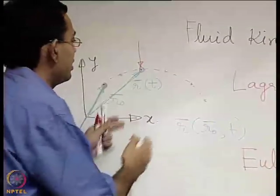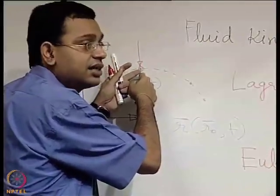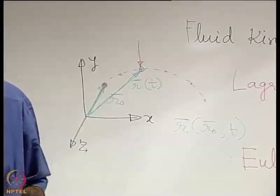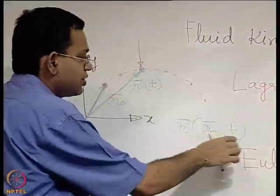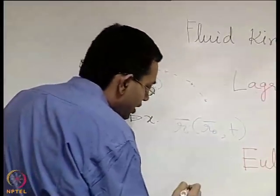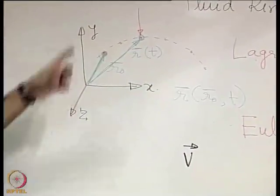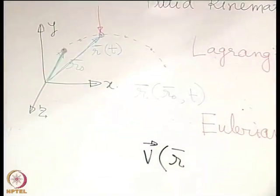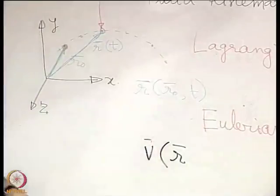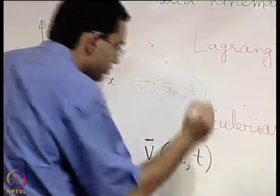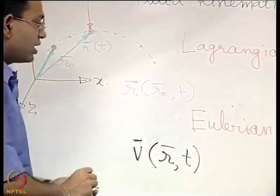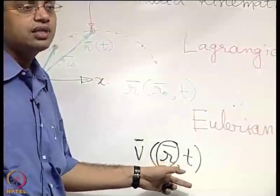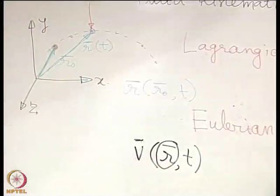That velocity is the same as the velocity of a tracer particle that at that instant of time was passing through that position. In the Eulerian approach, the velocity at a particular position is a function of the position r and the time t. The key difference is that here you focus your attention on a specified r and see the changes in a fluid property — velocity being the fluid property in this example.